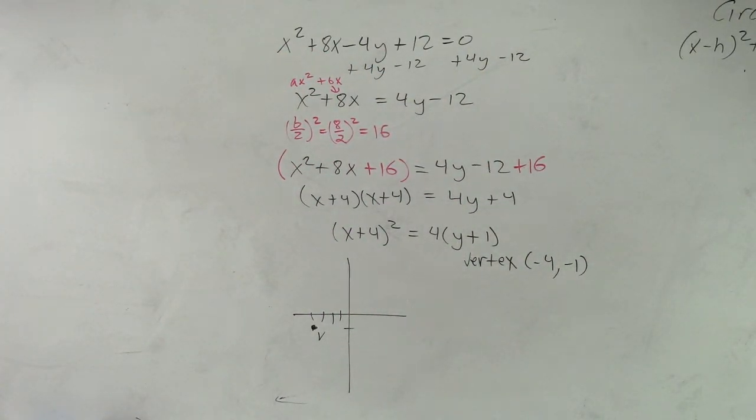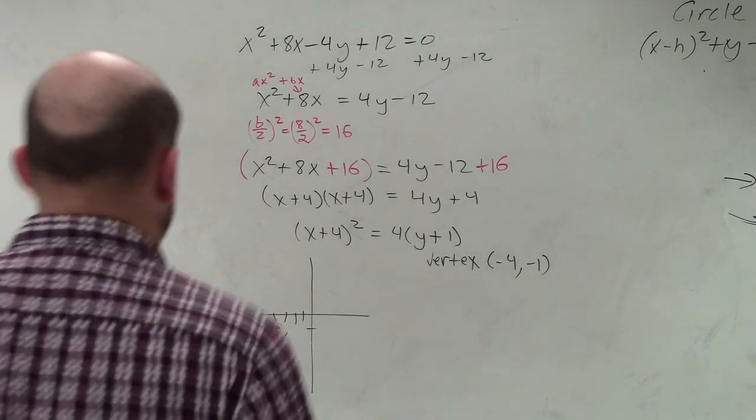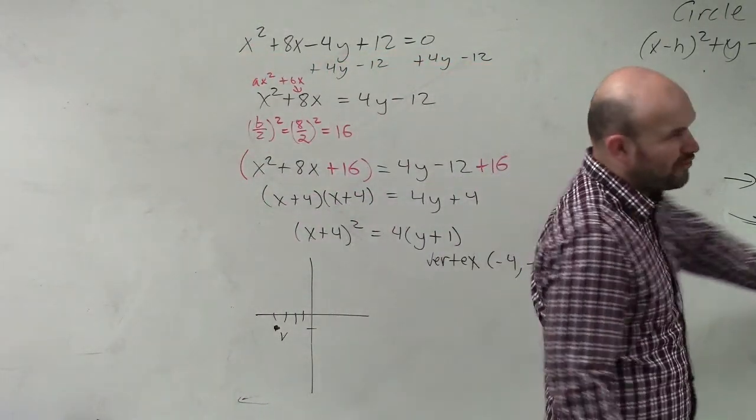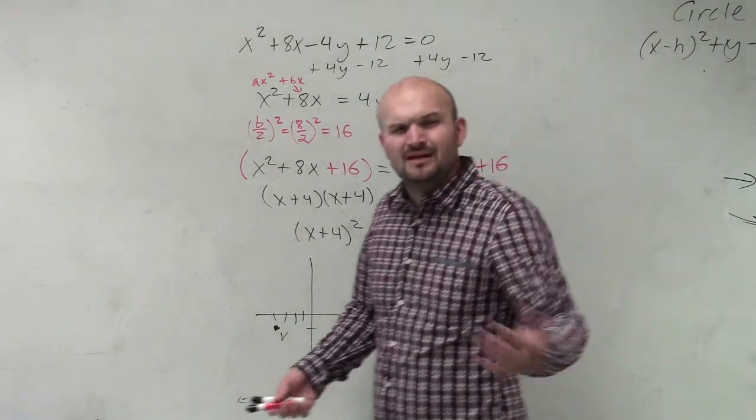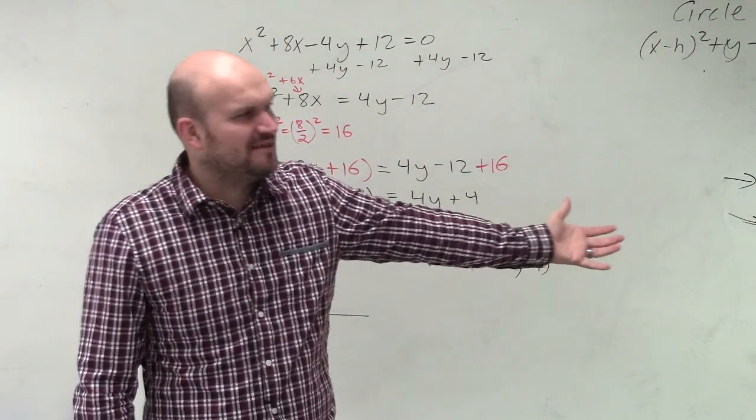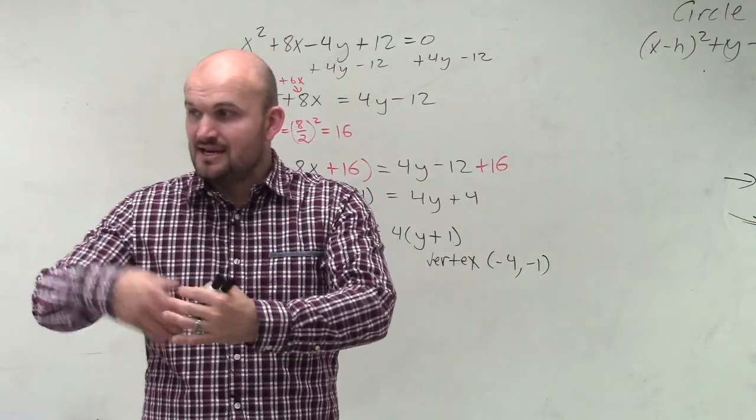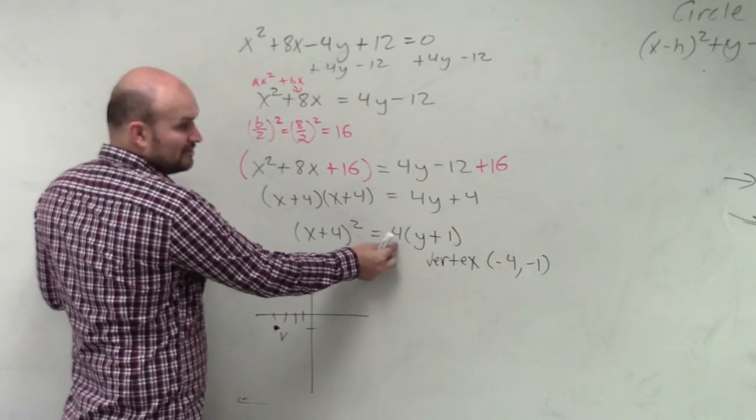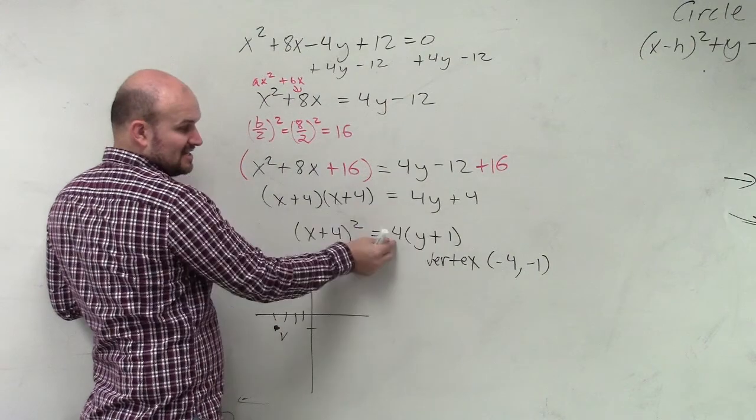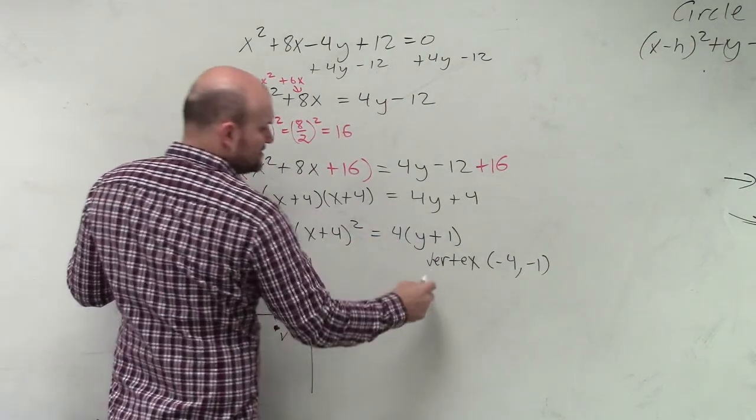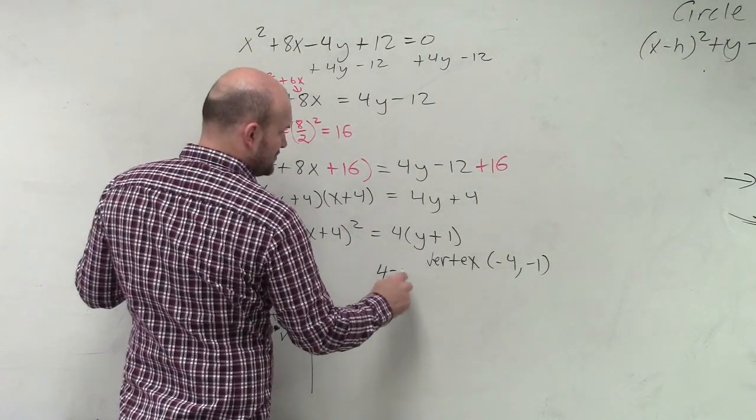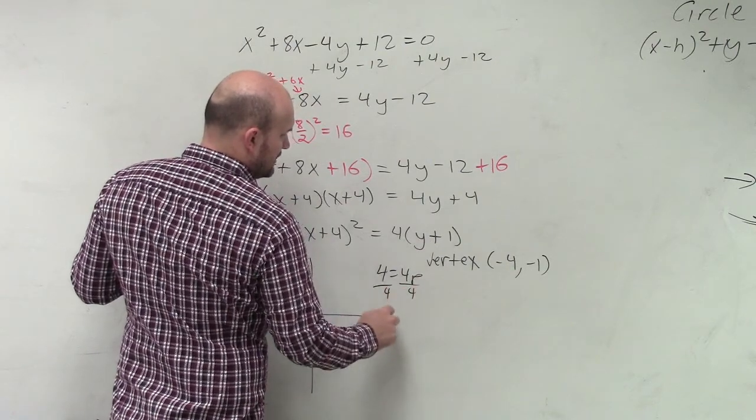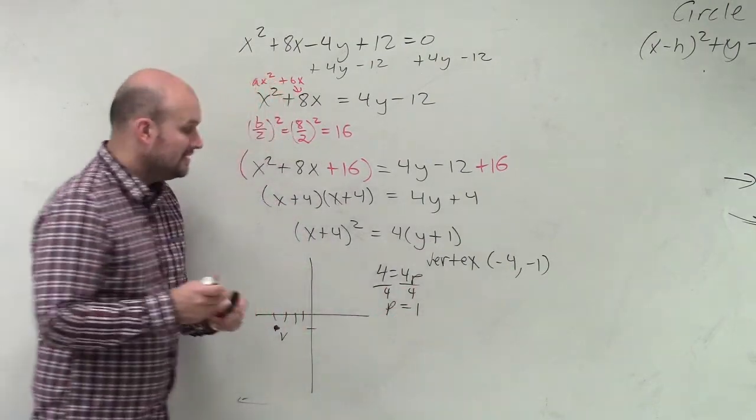The next thing is we need to understand, I don't really go by the formulas. The next thing, once I find the vertex, the next thing I want to do is find p. So what you're multiplying that (y - k) is your 4p. So in this case, I can say 4 = 4p. Therefore, p is equal to 1.